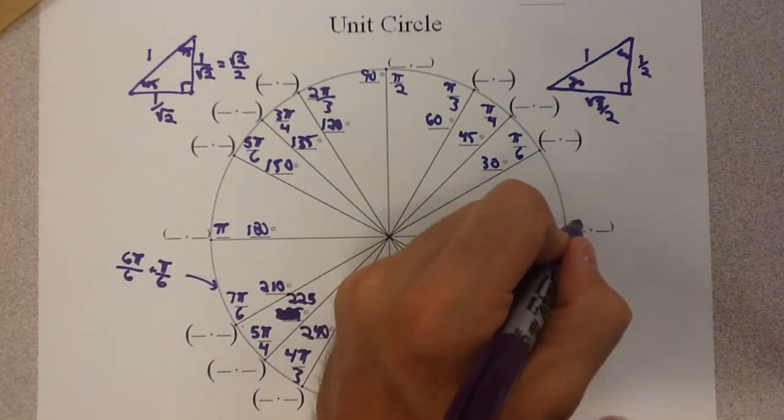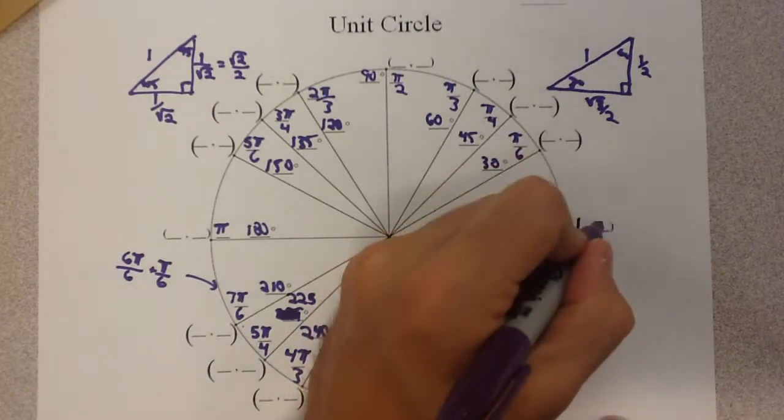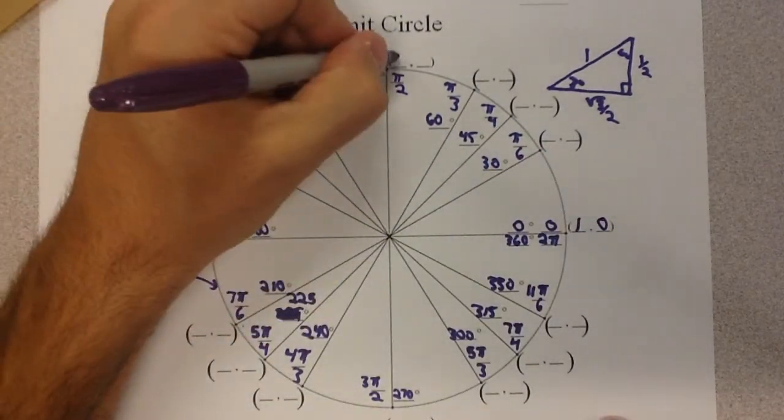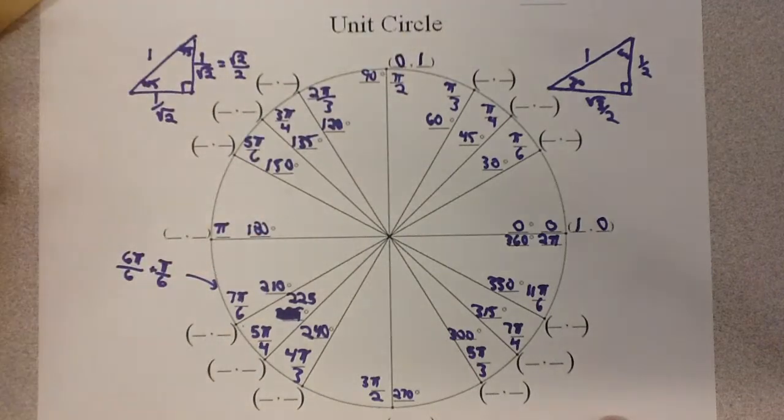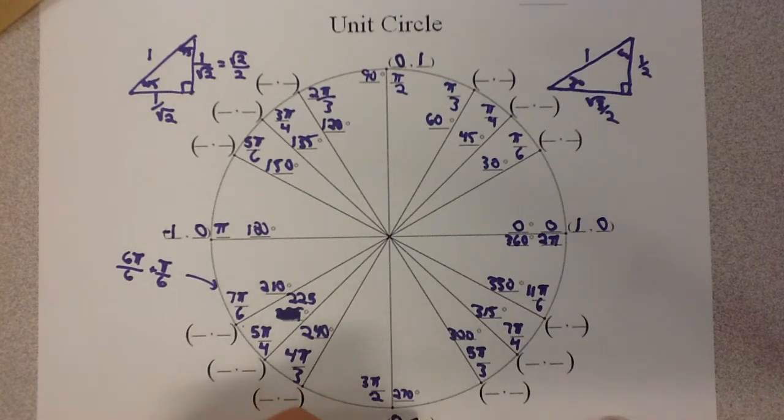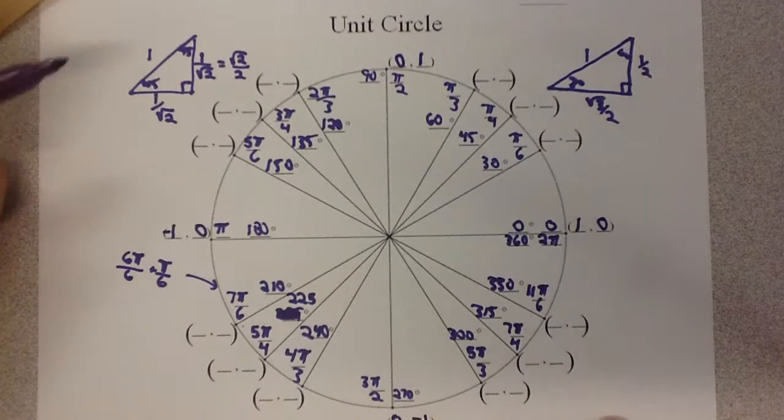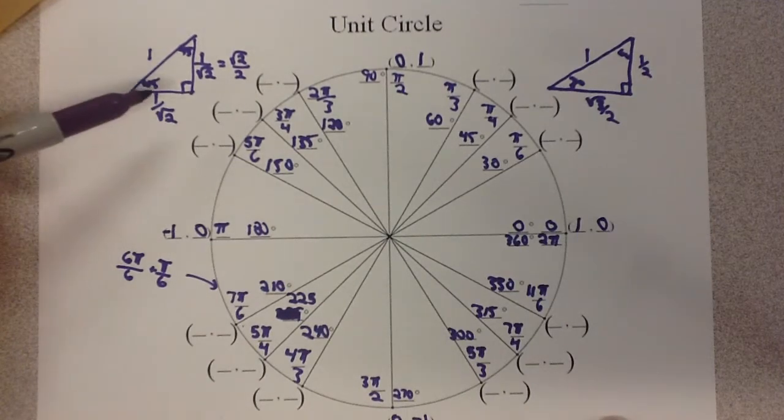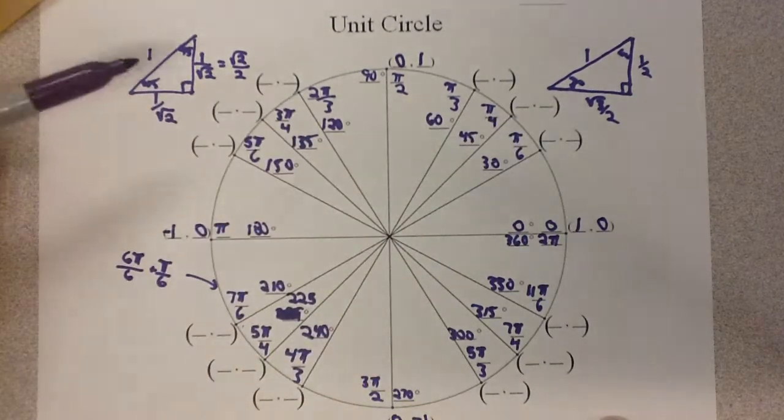So this would be 1 unit to the right, 0 units up. From the origin, this would be 0 units to the right, 1 unit up. 1 unit to the left, or negative 1, 0. 0, and then no units horizontally, 1 unit down. Now, for the rest of these, we're going to use these triangles that we have.